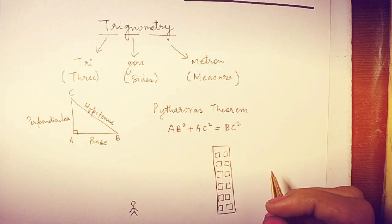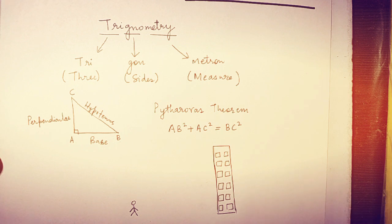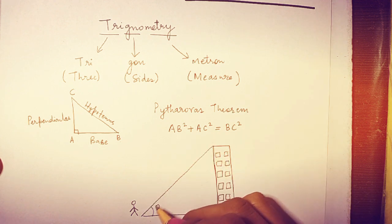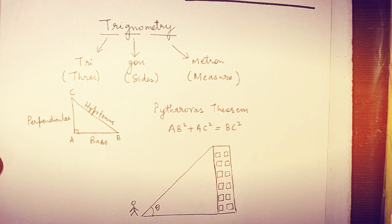Suppose you have a tall building. Now it is very easy to determine the horizontal distance that you can easily measure. Now this is a right triangle. If I know this angle, trigonometry can come handy in this situation.